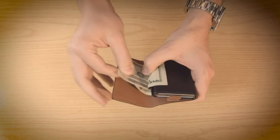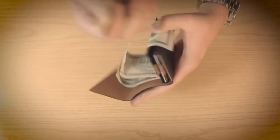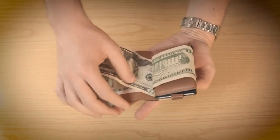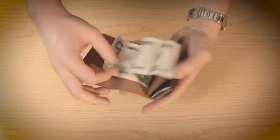To take a bill out, simply open the slab, choose the one you want and pull it out. It's really that simple. To put it back in, simply slide it in.